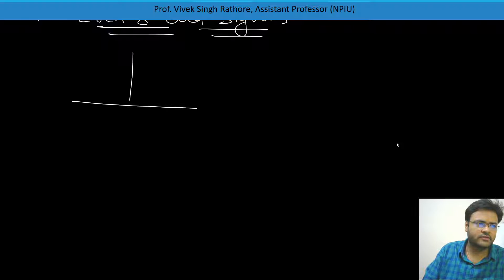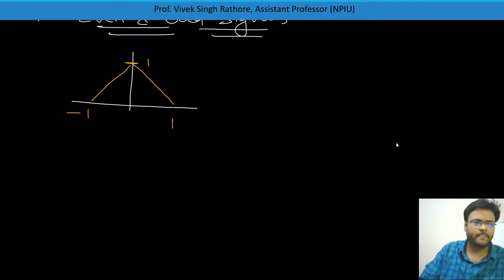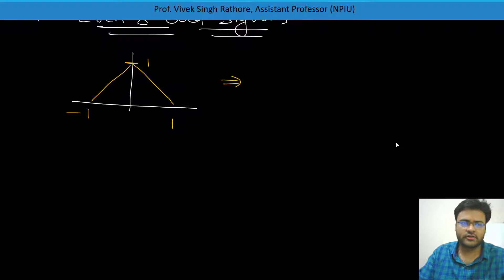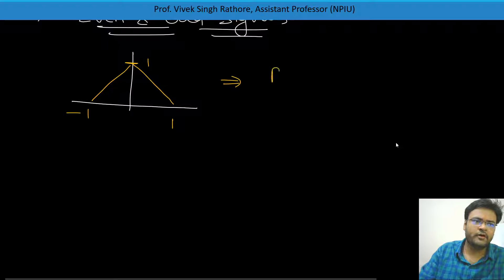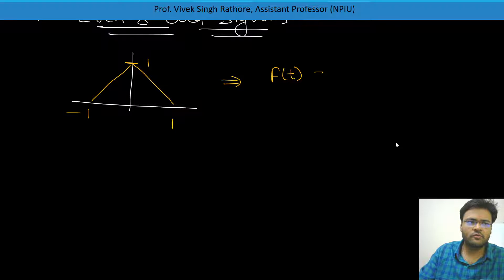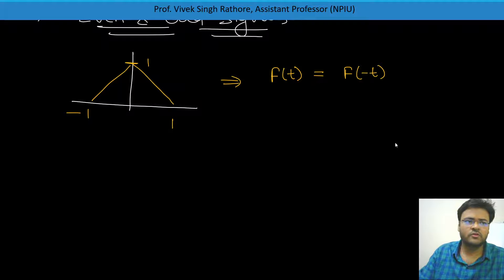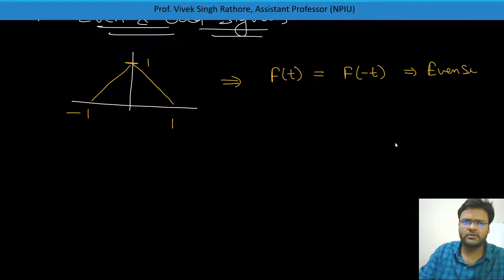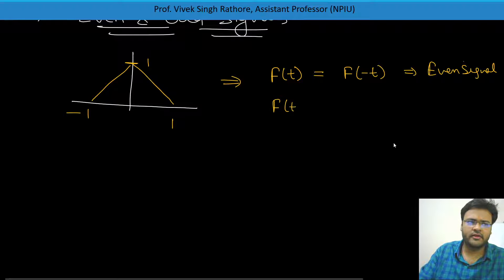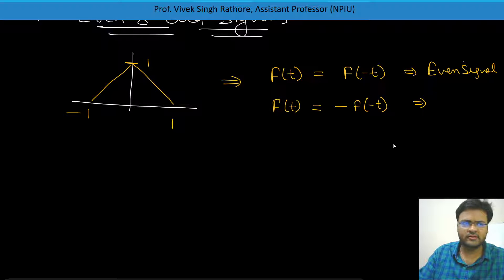I am taking one signal ranging from minus 1 to 1 with magnitude 1. This signal has been asked: is it an even signal or odd signal? The first criteria for detecting even or odd is: if you are taking a signal F(t) and if it is equal to F of minus t — which you can understand because we have already studied time reversal — then you can definitely call it an even signal.